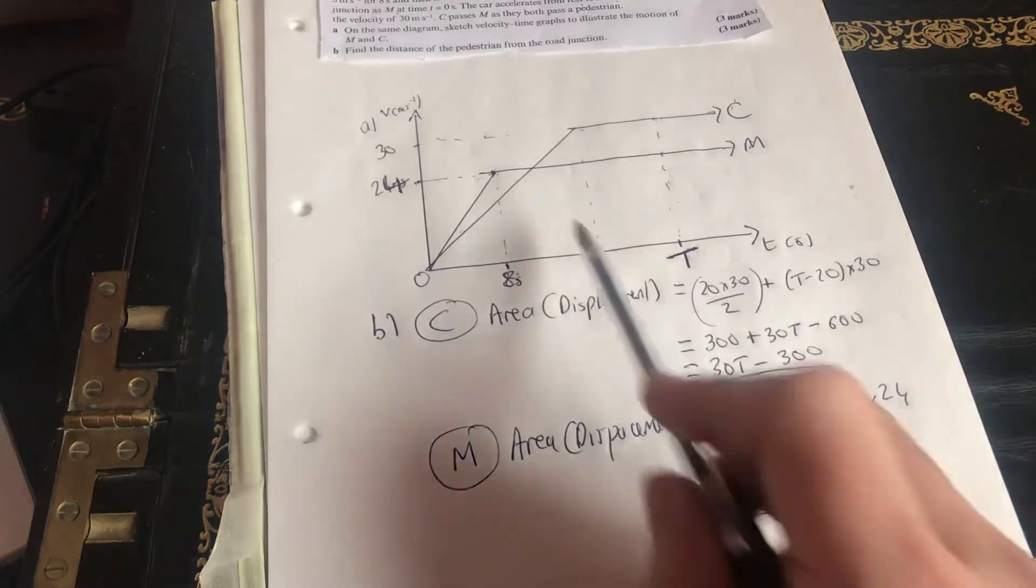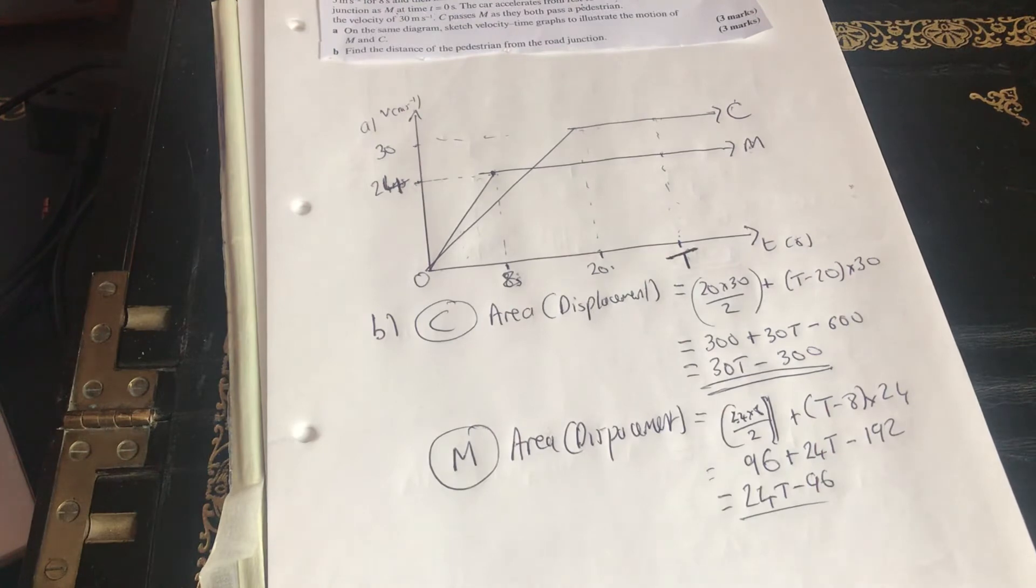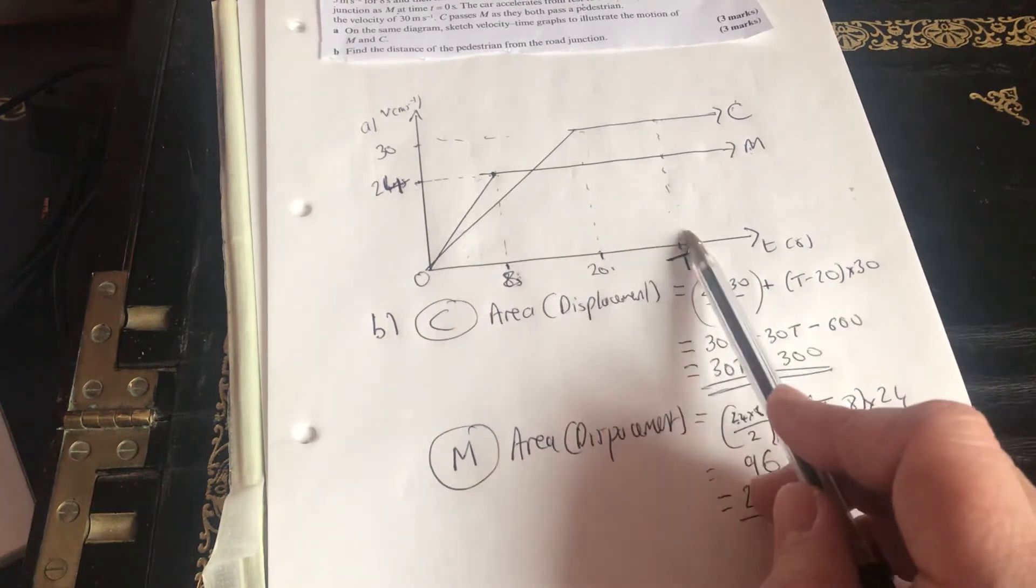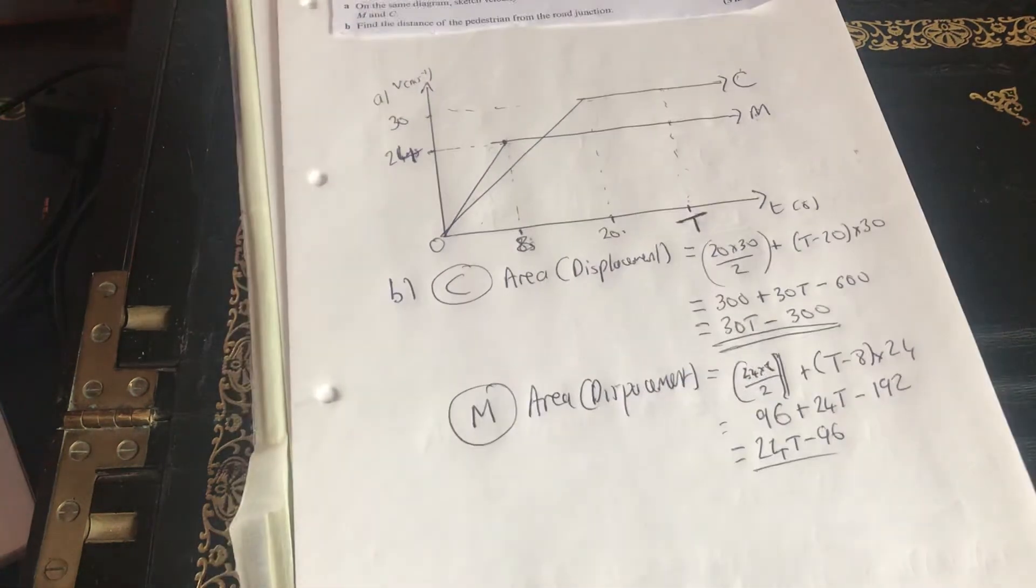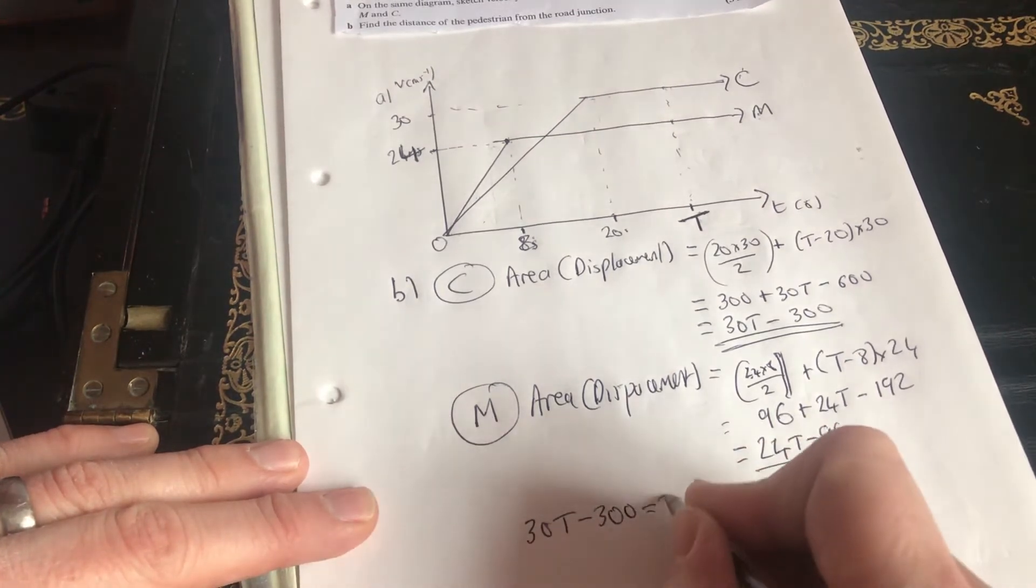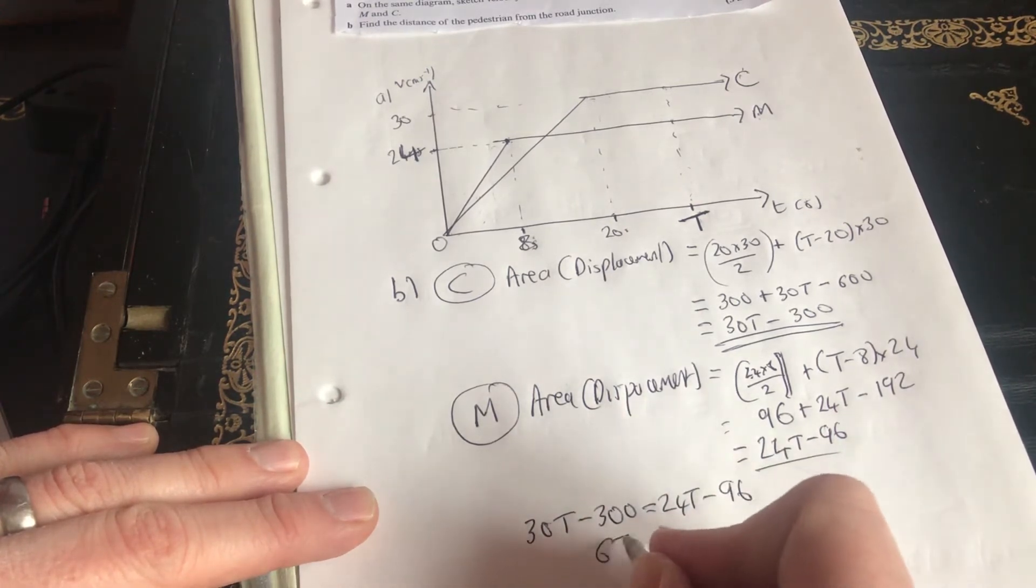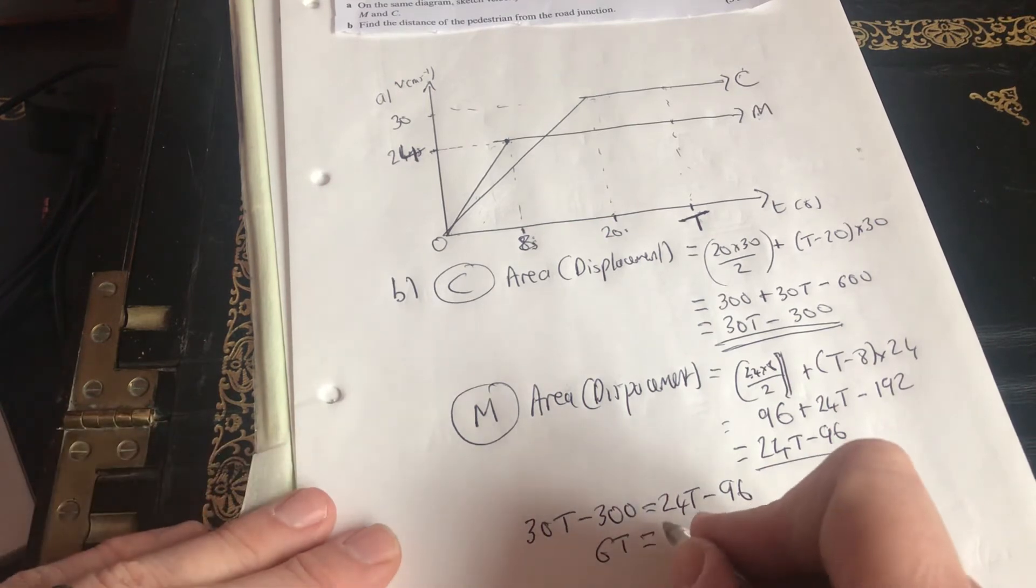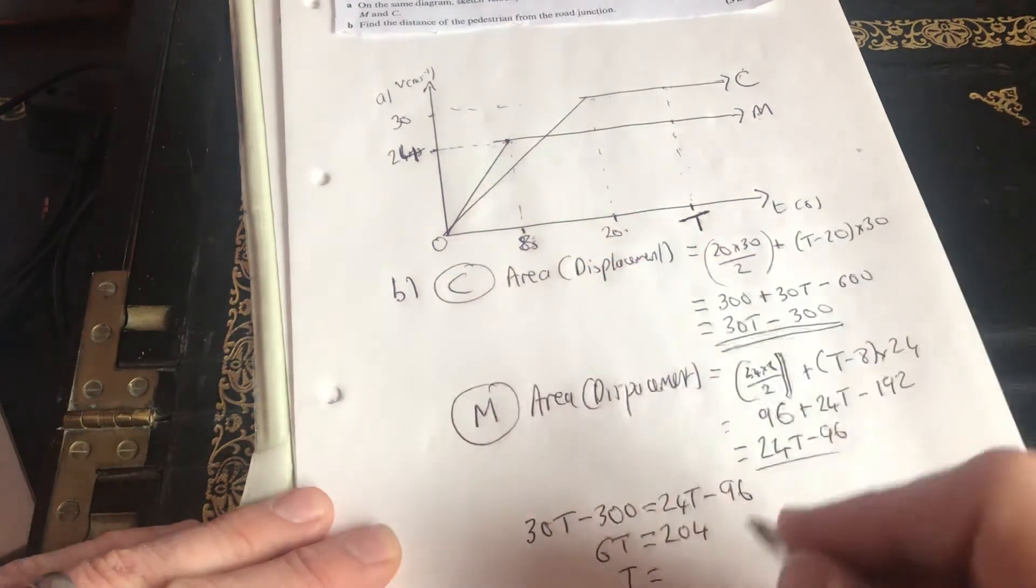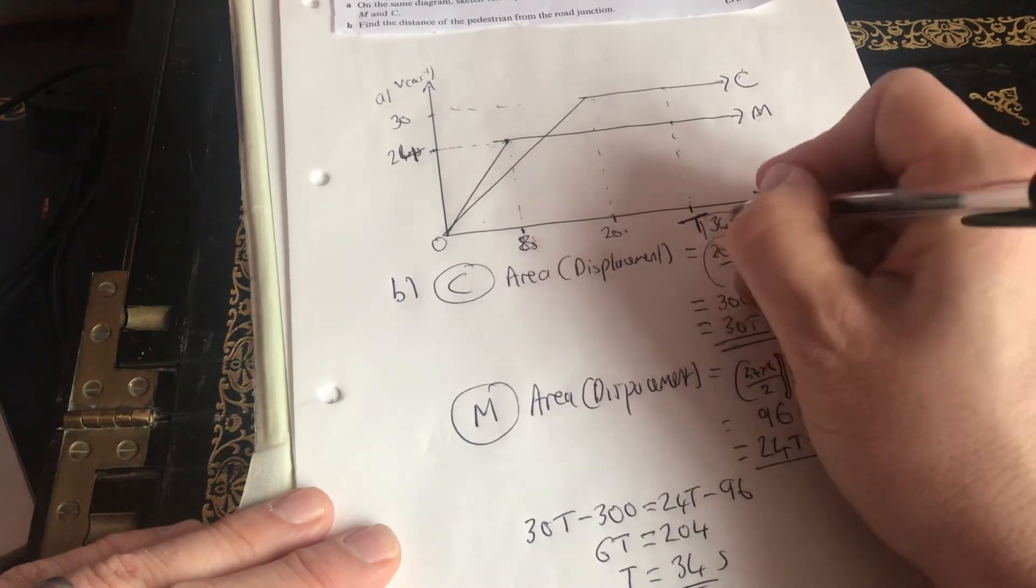So when we get to T, we're saying T is the time when they cross. So they've gone the same amount of distance. So the area of that is the same as the area of that. So I've set up an equation. I can solve 30T minus 300 equals 24T minus 96. 6T equals 204. Divide through by 6. So the time here is going to be 34 seconds. So at 34 seconds, they all cross.